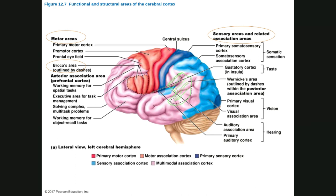The occipital lobe contains the primary visual cortex and visual association cortex. There is a Brodmann numbering system where a neurologist named Brodmann numbered different areas of the brain (e.g., areas 16, 17, 43, 44) since brain areas look similar in color but are functionally unique. We don't follow the Brodmann numbering system to study the cerebral cortex today, but know that the occipital lobe is responsible for vision.